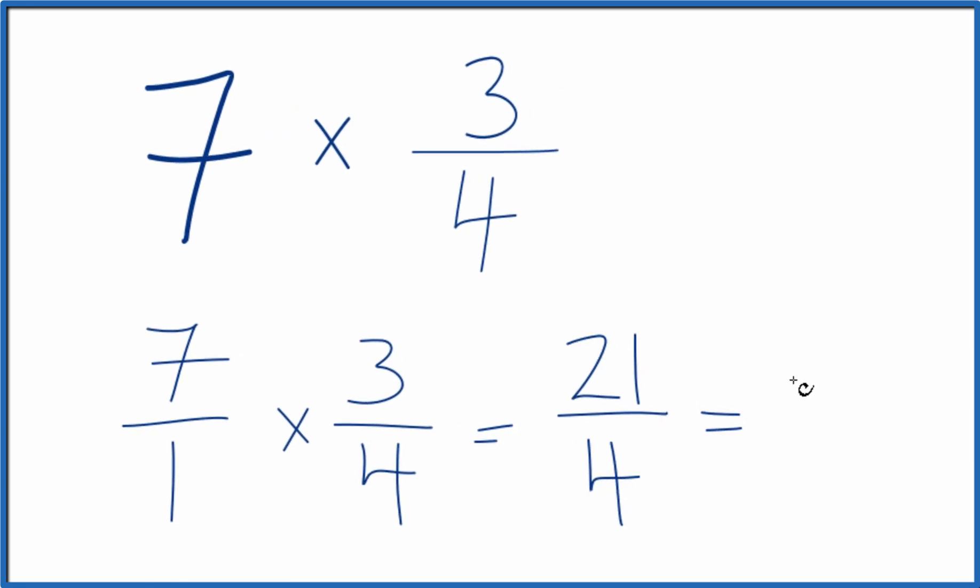4 times 5, that's 20, with 1 left over. We bring the 4 across. And 21 fourths, that equals the mixed number 5 and 1 fourth. So in answer to our question,